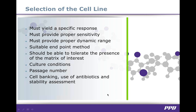Now that we've covered the basics and principles behind cell-based NAB assays, let's move to the development aspect. There are a number of parameters typically evaluated during the development of NAB assays. The key development steps include selecting a suitable cell line, choosing the proper cellular response — also known as the endpoint method — selection of the assay controls, and optimization of assay parameters.